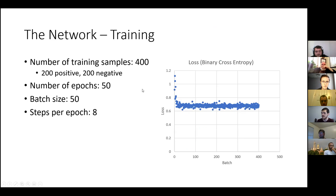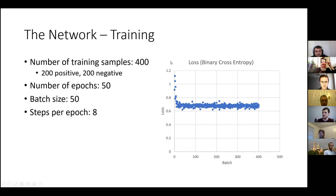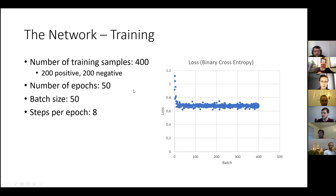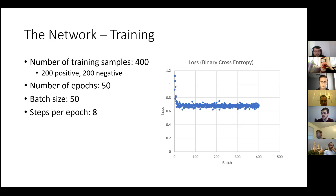There are 400 training samples — 200 positive and 200 negative cases, all from Arkansas. The model was trained for 50 epochs with a batch size of 50, giving 8 steps per epoch. The loss drops initially in the first 20 or so batches but then doesn't really go down further. It doesn't drop below 0.5, indicating the neural network needs tweaking in its size and parameters — it should at minimum be able to memorize the training set.